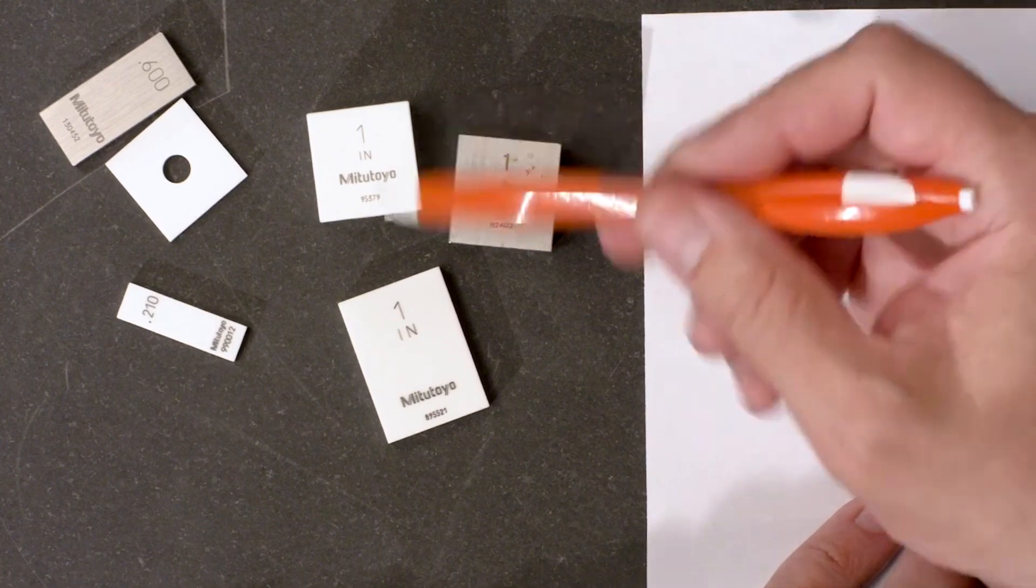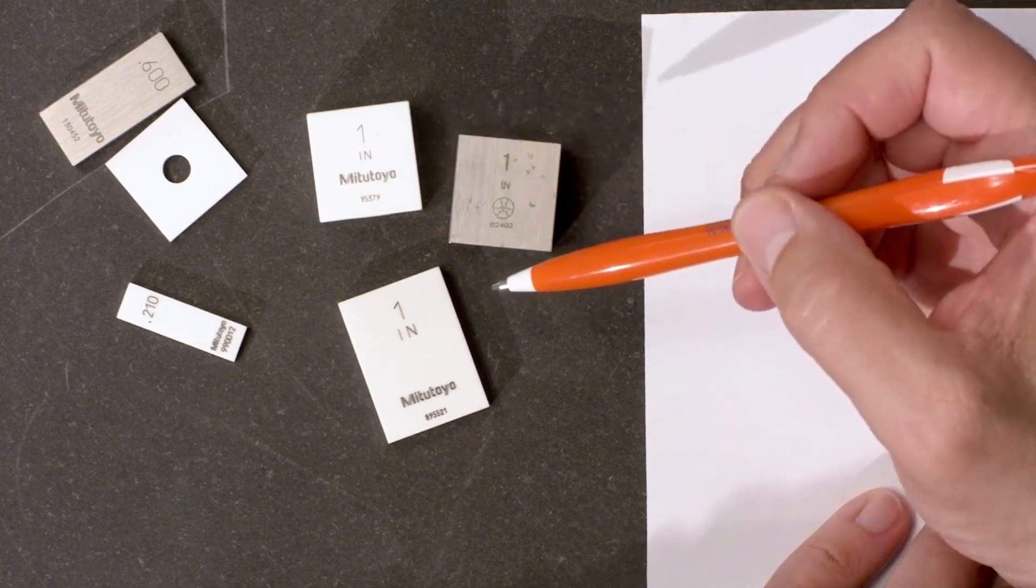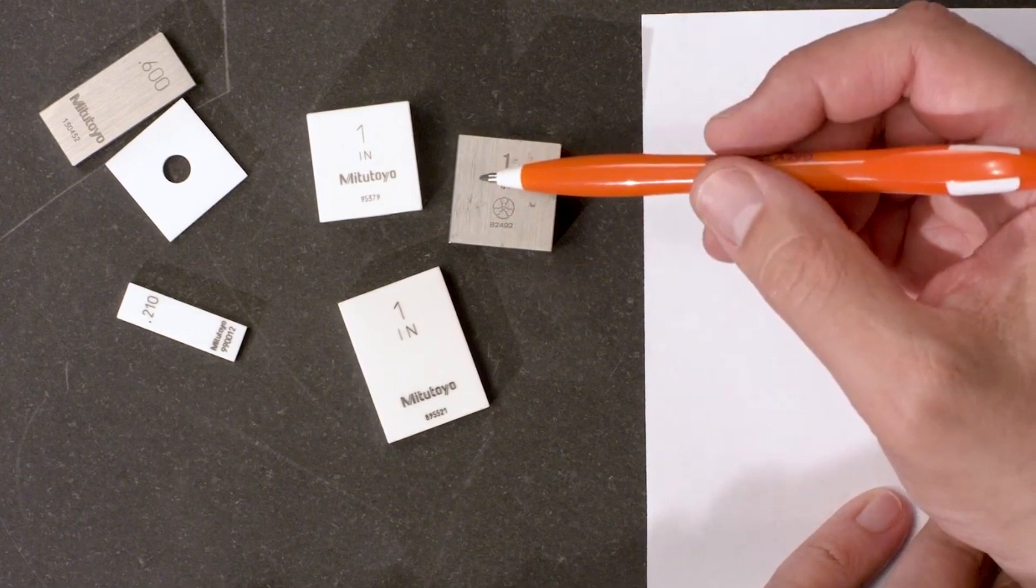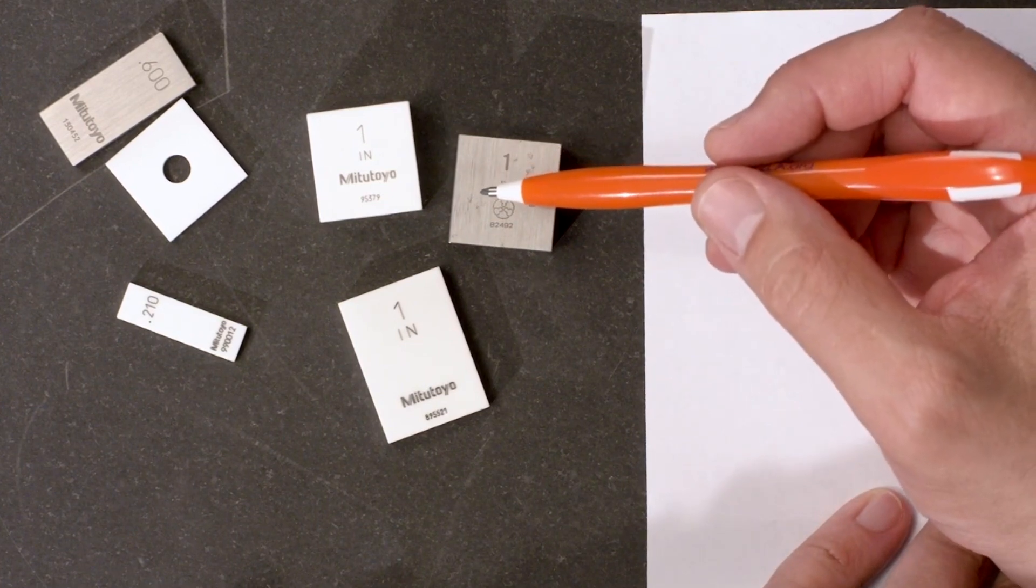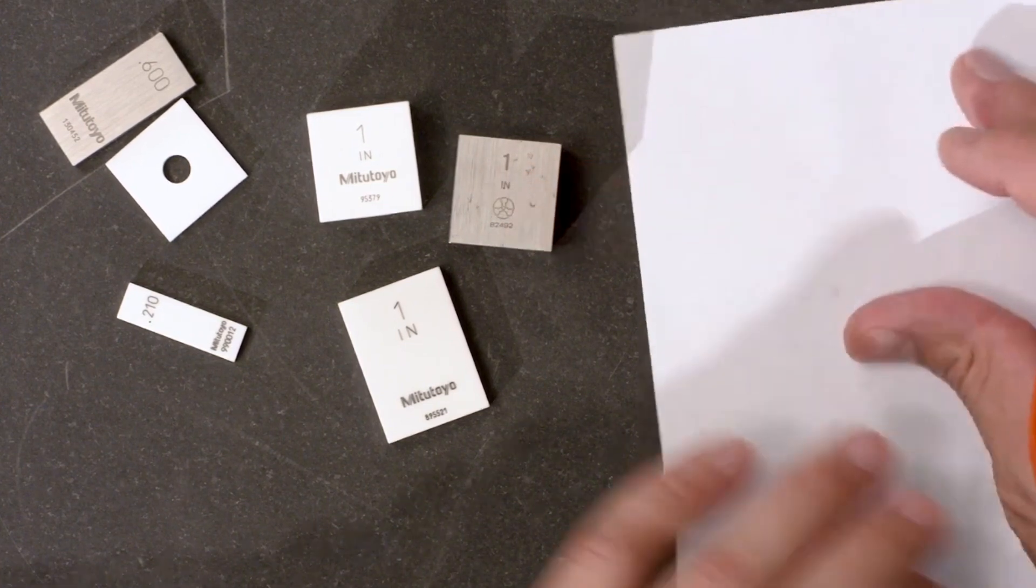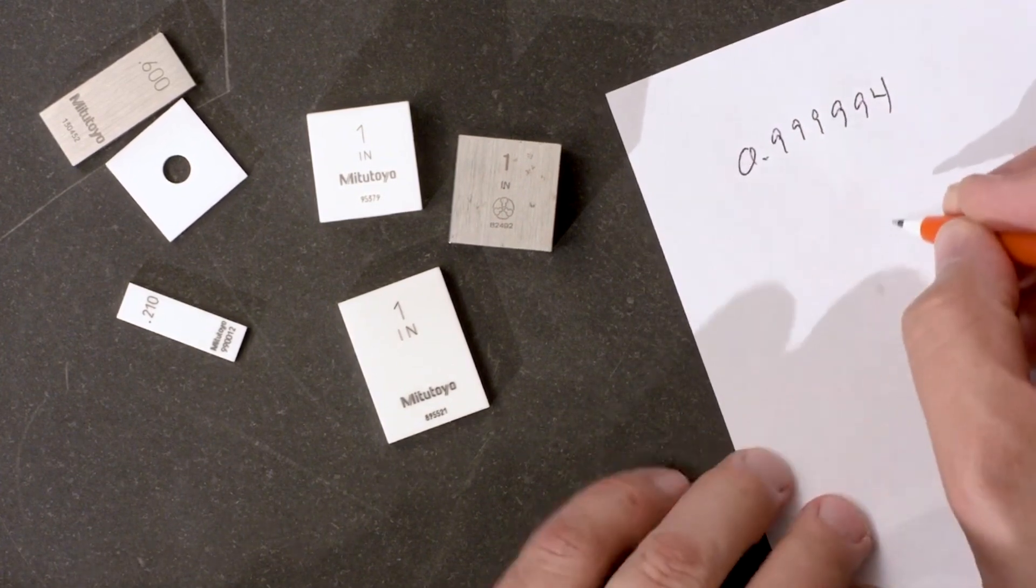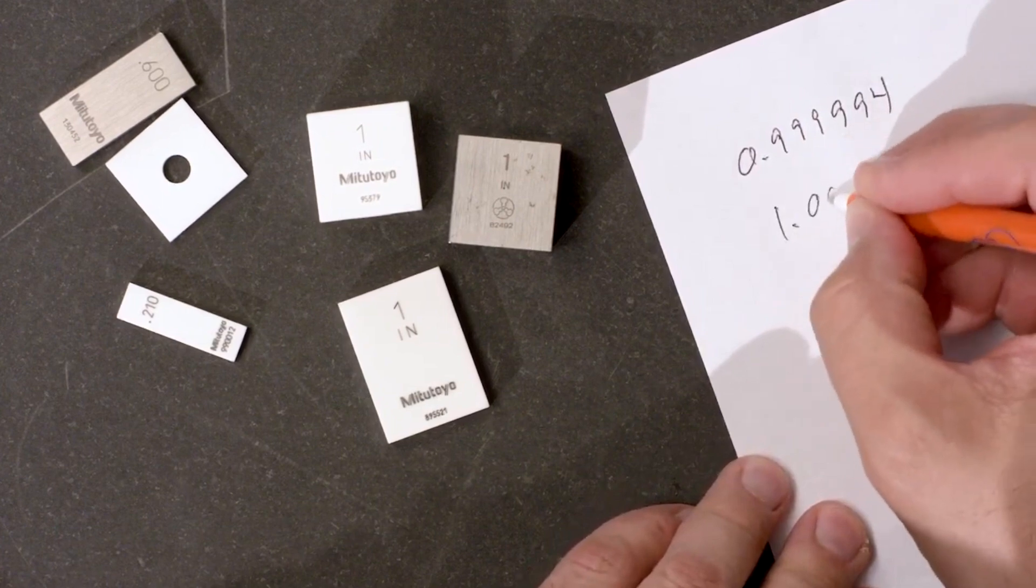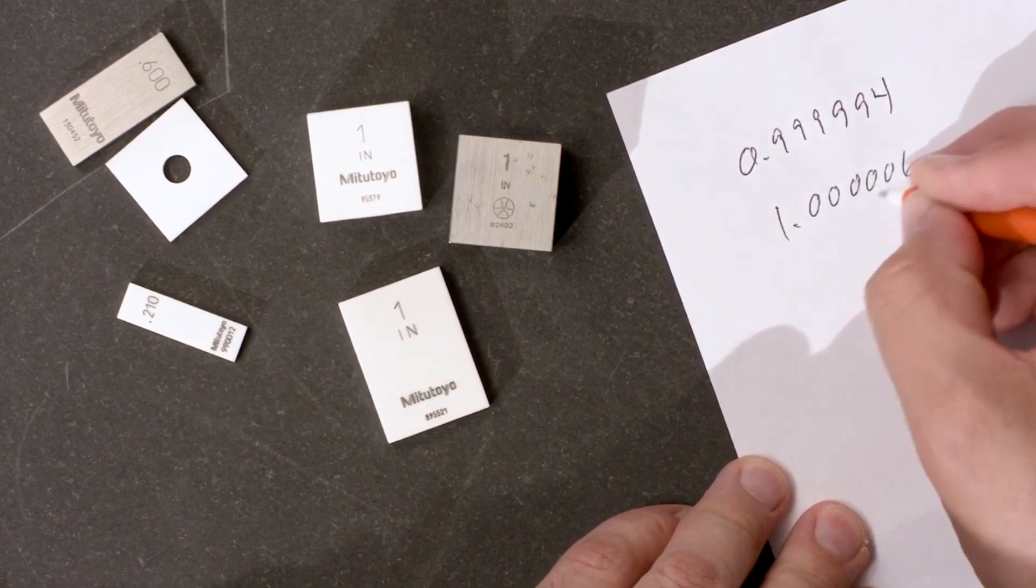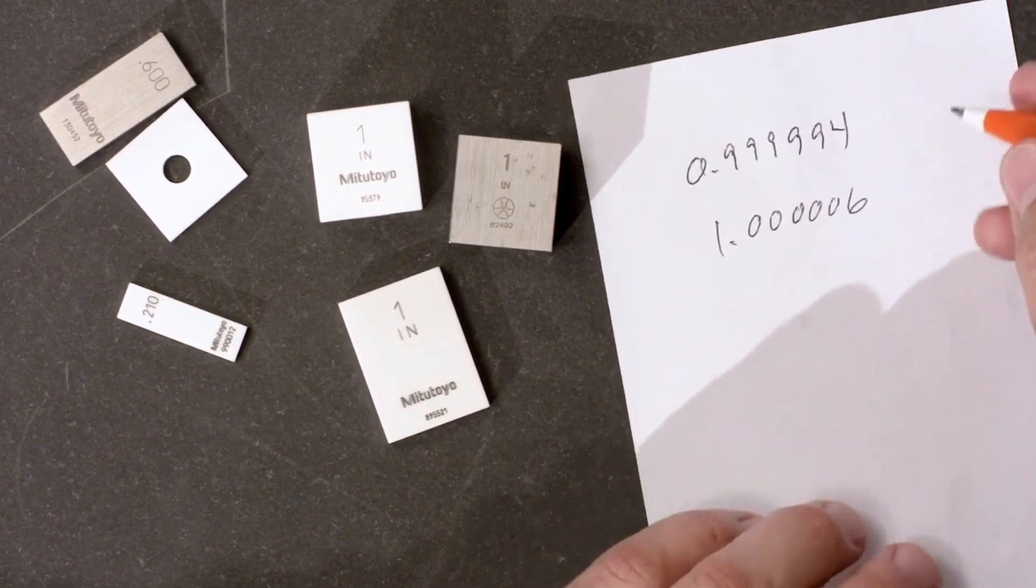If this Gauge Block or all three of these Gauge Blocks have been properly calibrated and found to be in tolerance, then I would know that the length is somewhere between the minus 6 millionths and the plus 6 millionths of an inch.